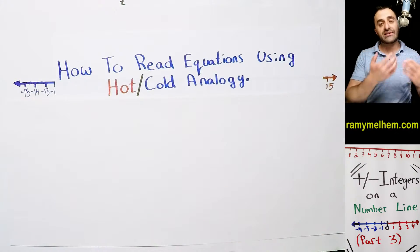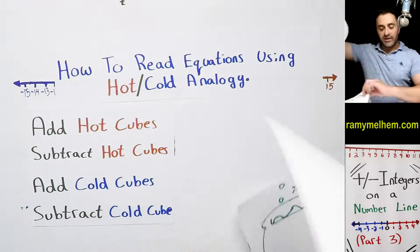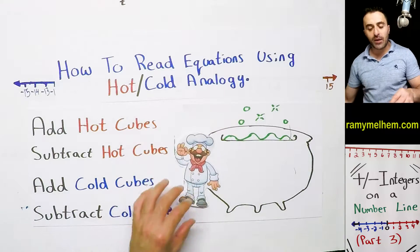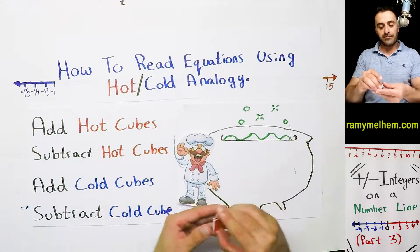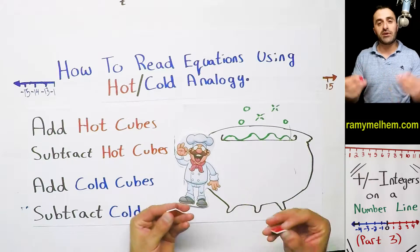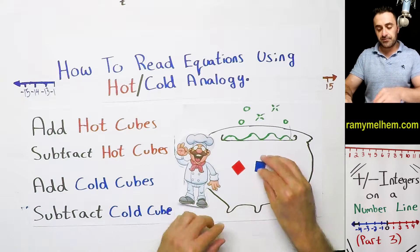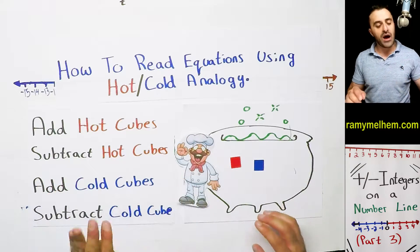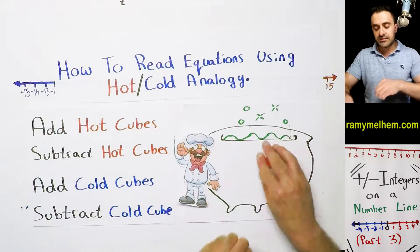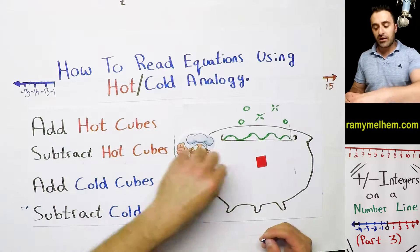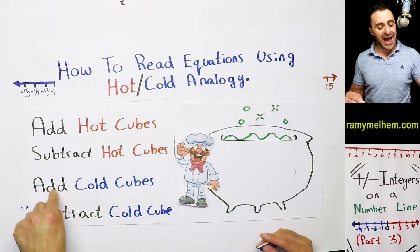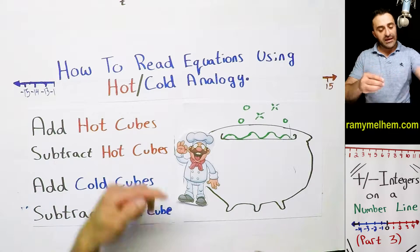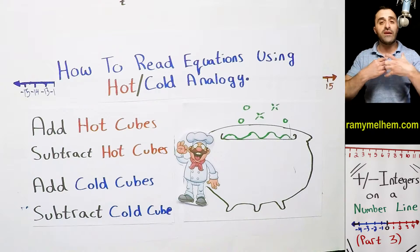If you remember in the last two lessons, we had this scenario where we had a soup chef and his job was to make soup. And he would heat his soup up and cool it off with these hot and cold cubes. So we're going to be coming back to this and using it to understand this number line business. So he had four options. He can either add hot cubes like this or he can subtract the hot cubes like that. He can add cold cubes like this or he can subtract the cold cubes like that. And each of these scenarios produced a different effect on the temperature.